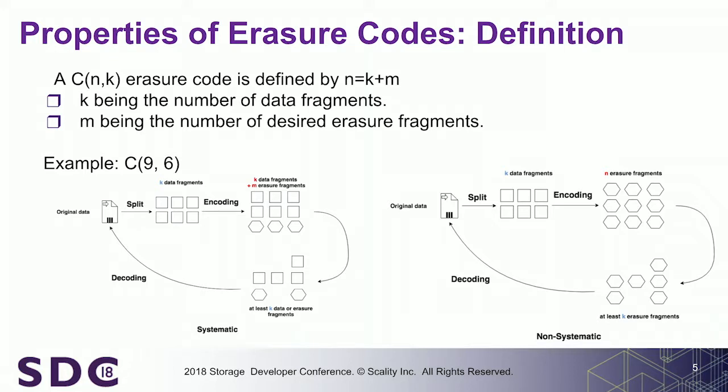You all know what an erasure code is, so I will go relatively fast — and you had one session just before about it. Just about the notation I use: I use N and K to express a code where N equals K plus M. K is the number of data fragments and M is the number of erasure codes. This is the notation we find in the research literature.